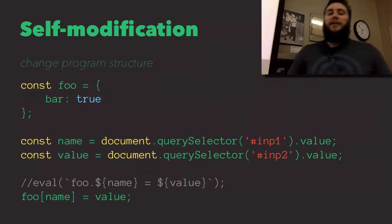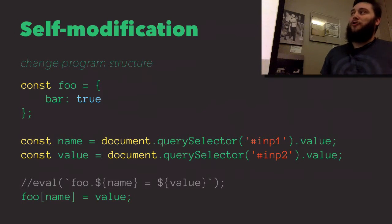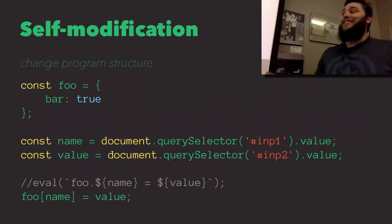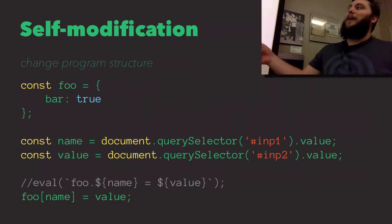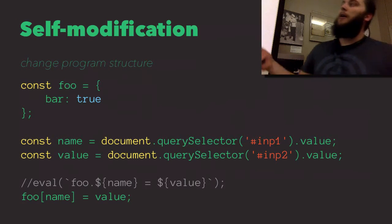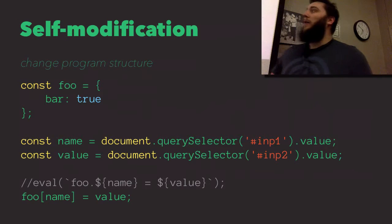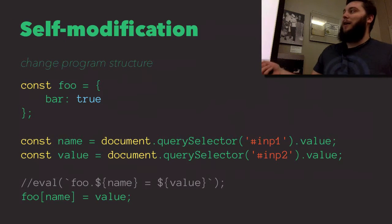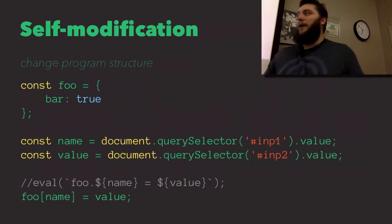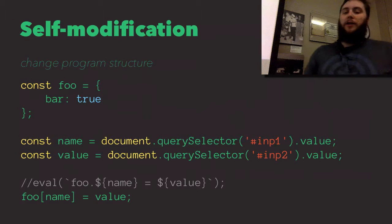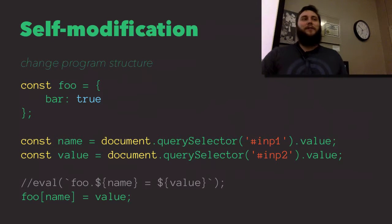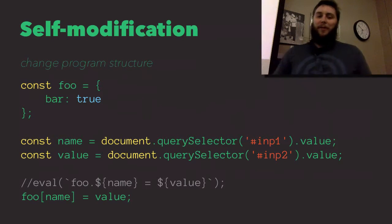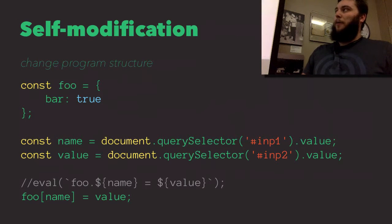Another one might be self-modification — changing the program structure. If we take the same eval example and cross it out, and instead use square brackets, we're changing the structure. We're modifying this foo object here and adding a new value — whatever the value is that the user provides as the key, and whatever value they set. We're modifying that, changing it at runtime. These are things we kind of take for granted; they're just built into the language. You don't think about them as metaprogramming, but they're really essential to our programs.